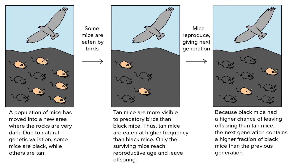Eventually, over generations, the population of tan mice will get smaller and smaller until there are none left, while the black mice are able to survive and reproduce and their babies will have black coats just like mom and dad.